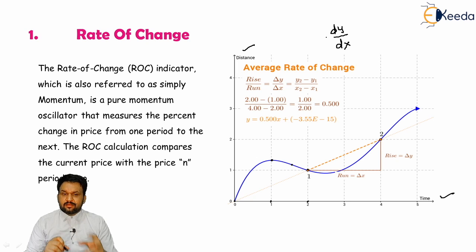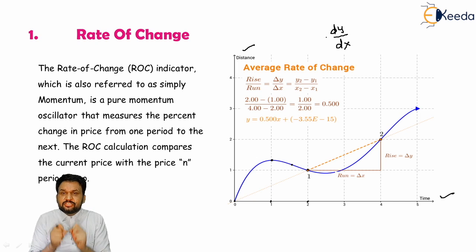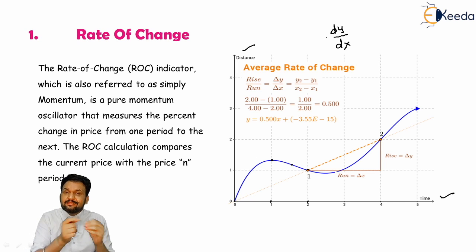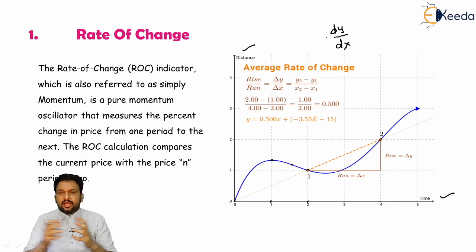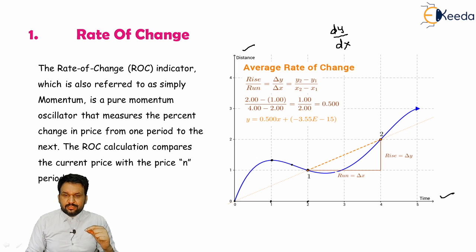The rate of change calculation compares the current price with the price from a specified period ago — what is the current change over a given period. You can simply apply the derivative to find that change. I will give you a complete methodology for how derivatives are applied to find rate of change.